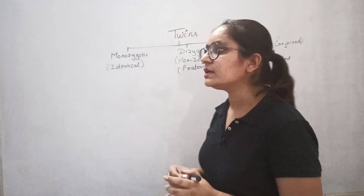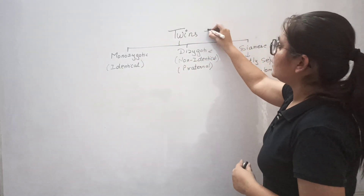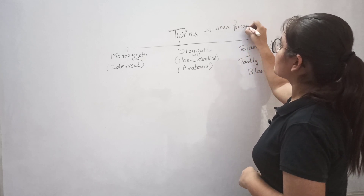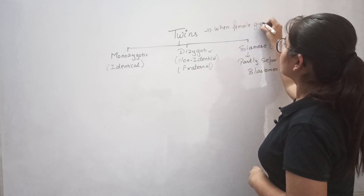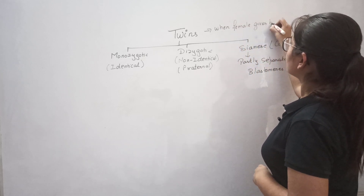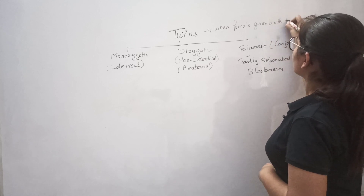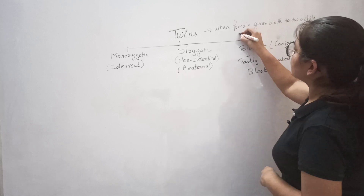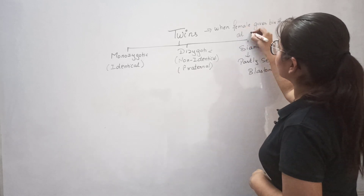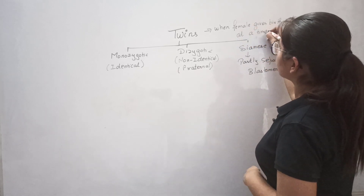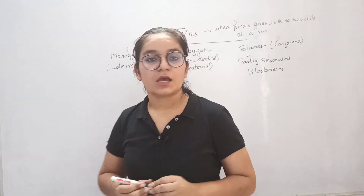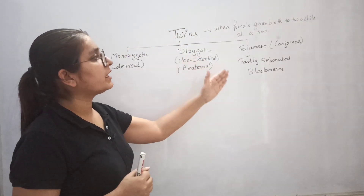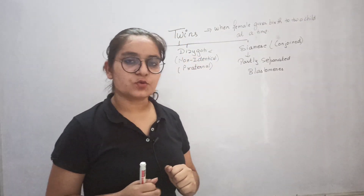What are twins? Twins are when a female gives birth to two children at a time. Now there are physically monozygotic and dizygotic, and siamese twins as well.